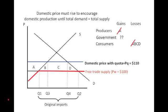Looking at the welfare effects: gains and losses offset each other on the domestic consumer and producer side — producers gain at the expense of domestic consumers. The net effect is B + D, which are the standard deadweight losses, exactly the same as with a tariff. And then there is area C, which is a loss to domestic consumers. It's not clear whether the government is going to earn this as revenue — which is what we'll explore now.